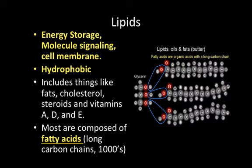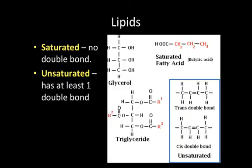Most lipids are composed of fatty acids — long chains of carbon that can be literally thousands of carbons long. The fatty acids bond to a glycerol molecule through a dehydration reaction, losing two hydrogens and an oxygen to form a chemical bond. Saturated fatty acids have no double bonds, meaning a full complement of hydrogens. Unsaturated fatty acids have at least one double bond. Those are the two main types of lipids.